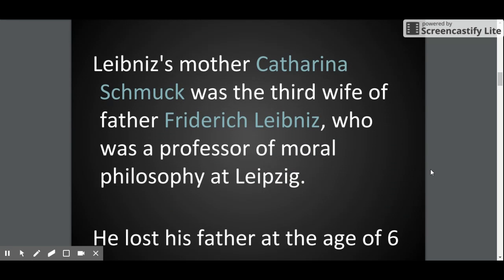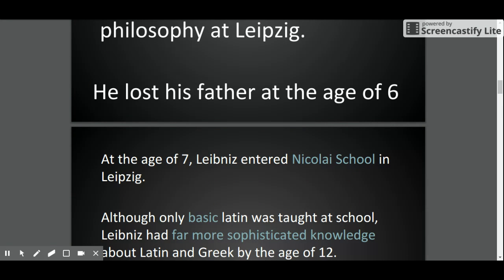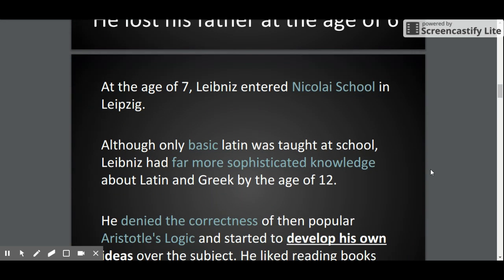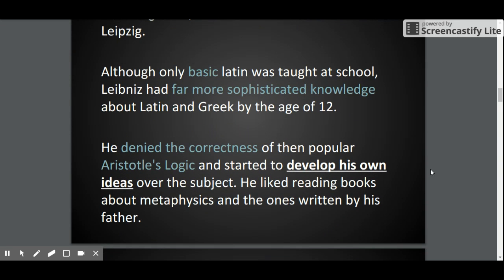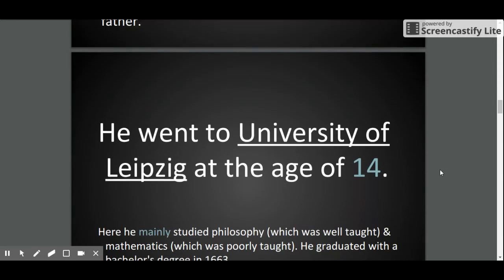In his early life, his father was a professor of philosophy at Leipzig University. He lost his father at the age of six. He denied the correctness of popular Aristotelian logic and started to develop his own ideas.